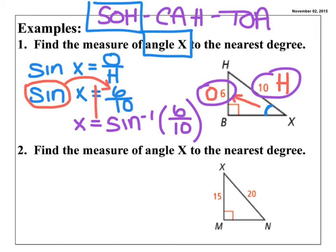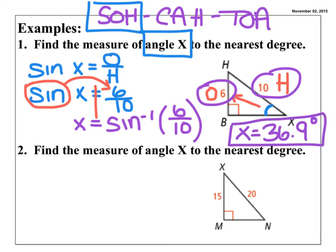The inverse of sine is inverse sine, or sine to the negative first. That negative 1 is just notation showing we're using inverse sine. We're simply going to put that value in our calculator: press second, then sine, then 6 divided by 10, close parentheses, hit enter. The value is X is approximately 36.9 degrees. I always round to the nearest tenth on all your problems.